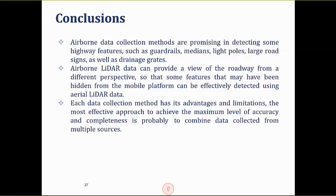In conclusion, we found that the airborne LIDAR data collection platform is promising for identifying larger highway features such as guardrails, medians, light poles, and large signs. For smaller signs, we are not able to effectively identify them unless multiple data sources are used. Airborne LIDAR has unique advantages due to its different perspective — it can identify hidden features like culverts and bridges that cannot be found through mobile platforms. The best approach is to combine different data sources to achieve the maximum level of accuracy.